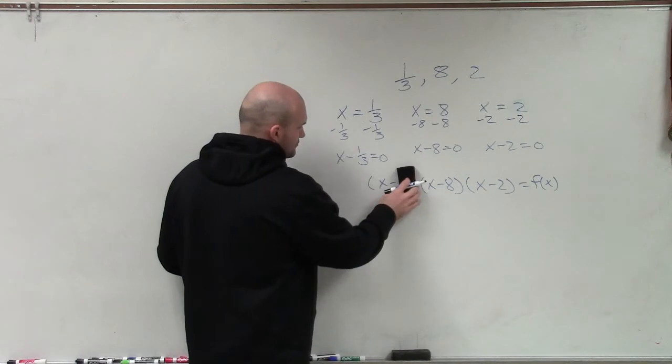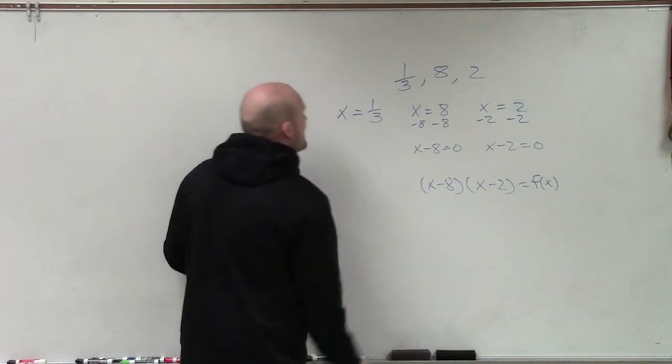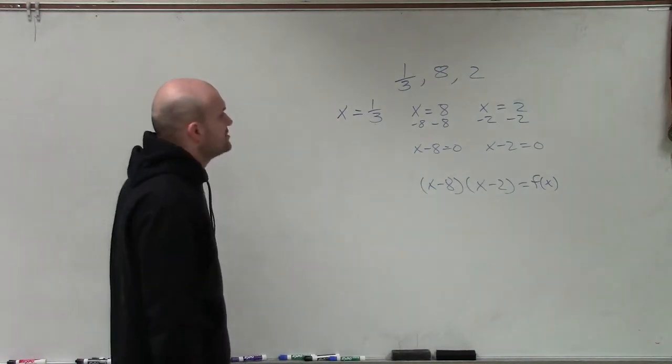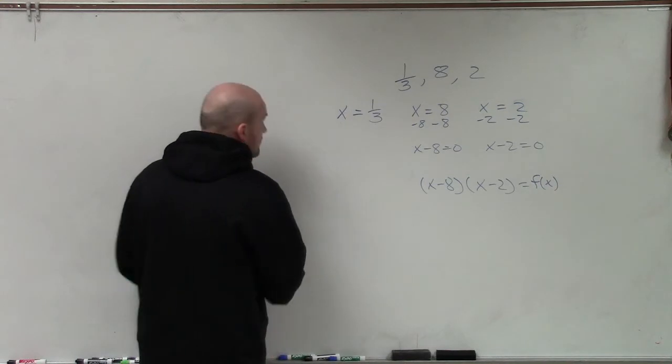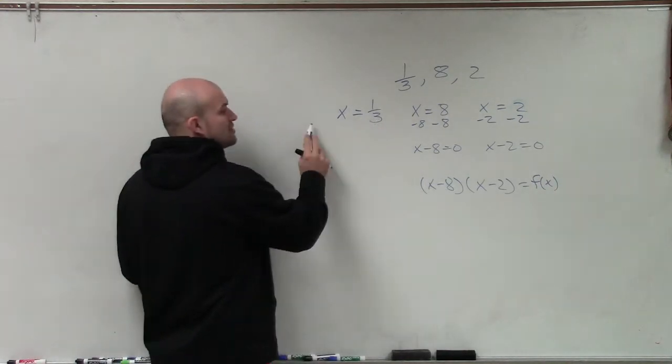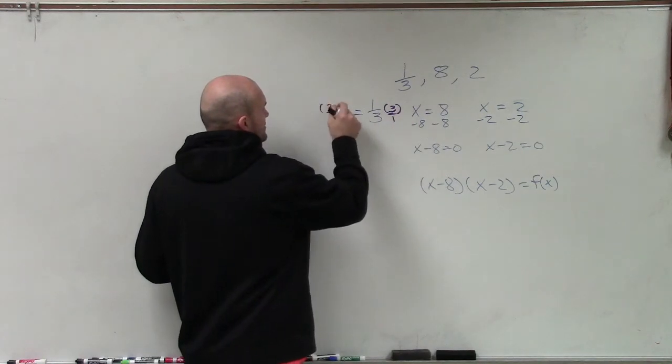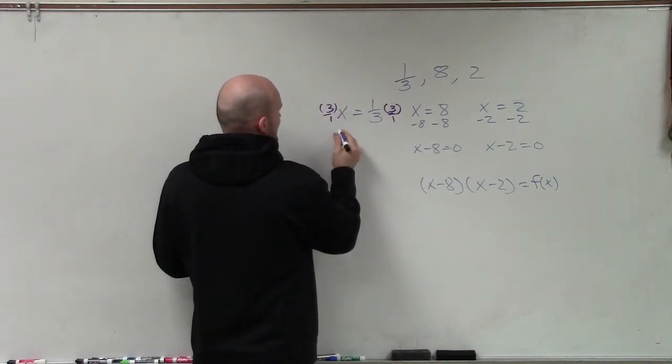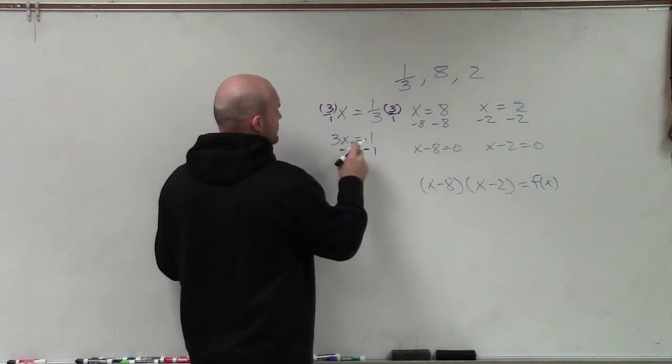So I need to determine what is another way that I can rewrite this factor without a fraction. So what we like to do when we look at this is if I have x equals 1/3, what I can do is instead of setting this equal to 0, what I'm going to use is my inverse operations. And what I mean by that is rather than subtracting 1/3 over, let's multiply by 3 over 1 on both sides. So therefore, I have now 3x equals 1. And then subtract 1 on both sides.